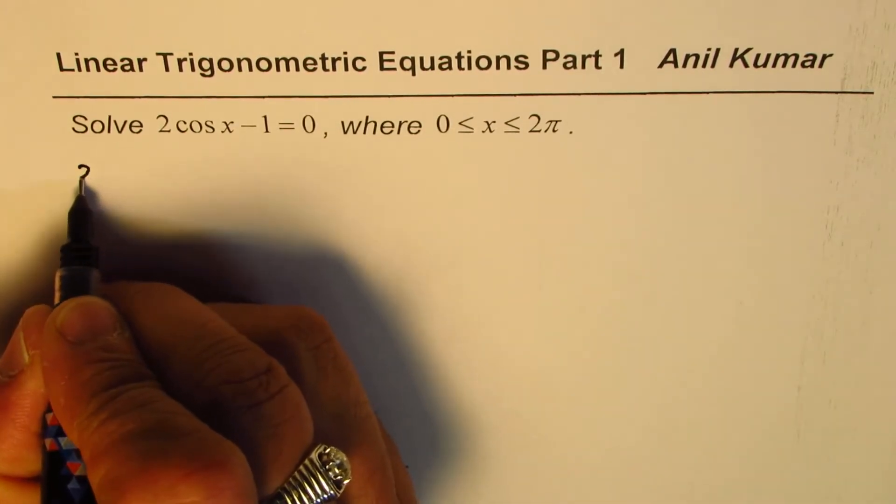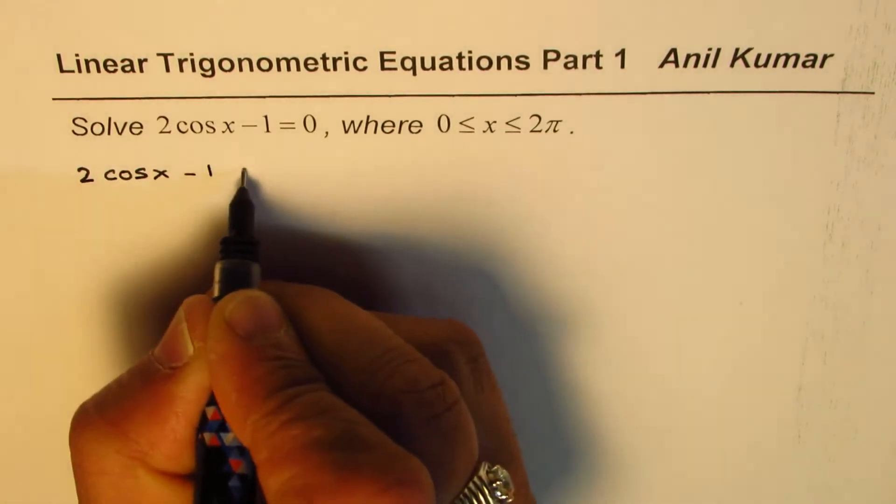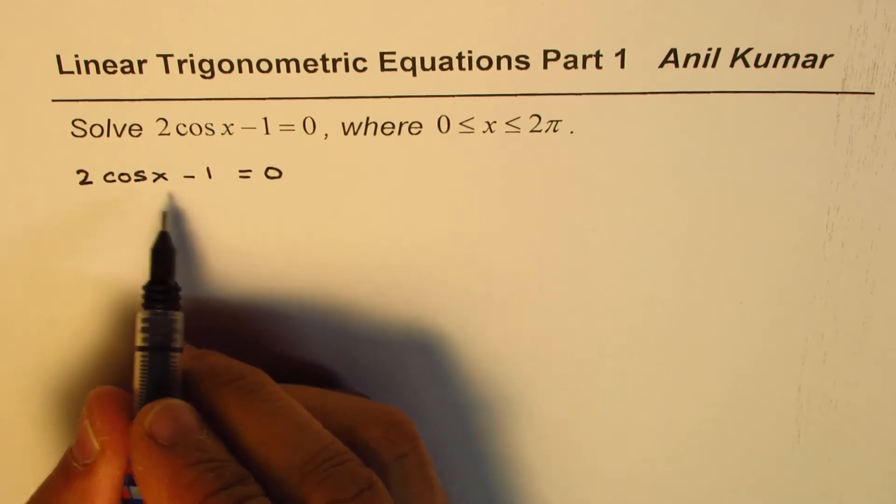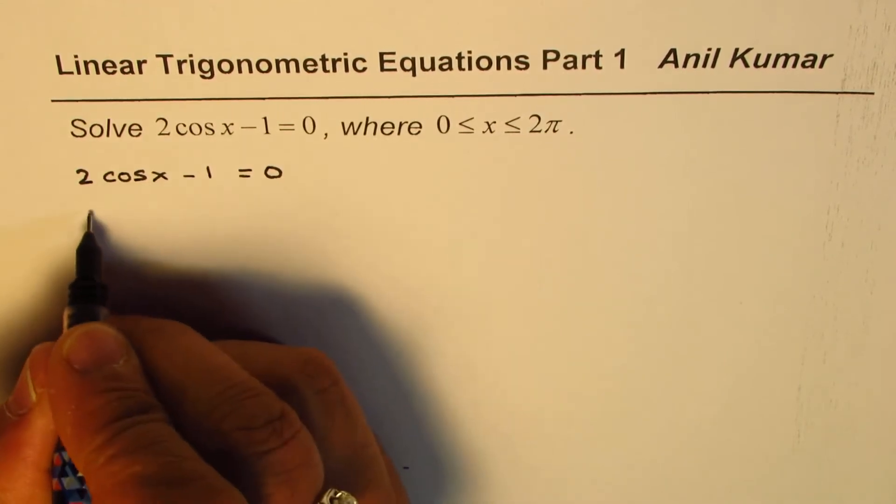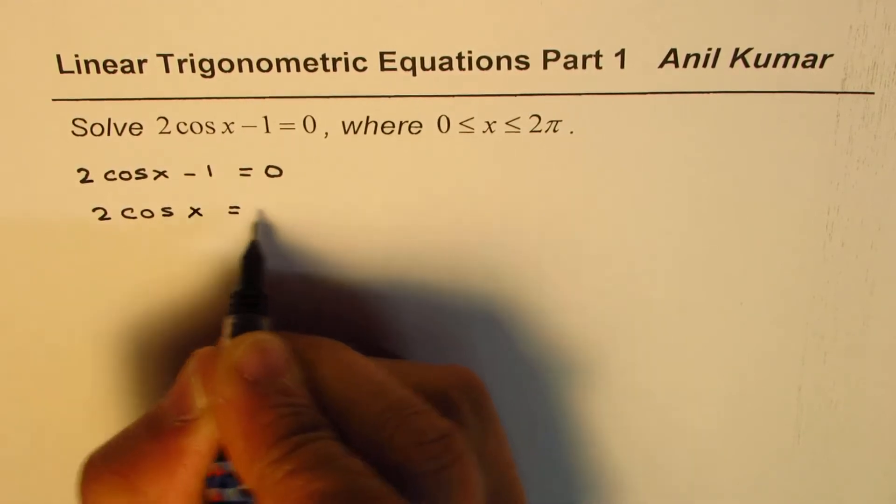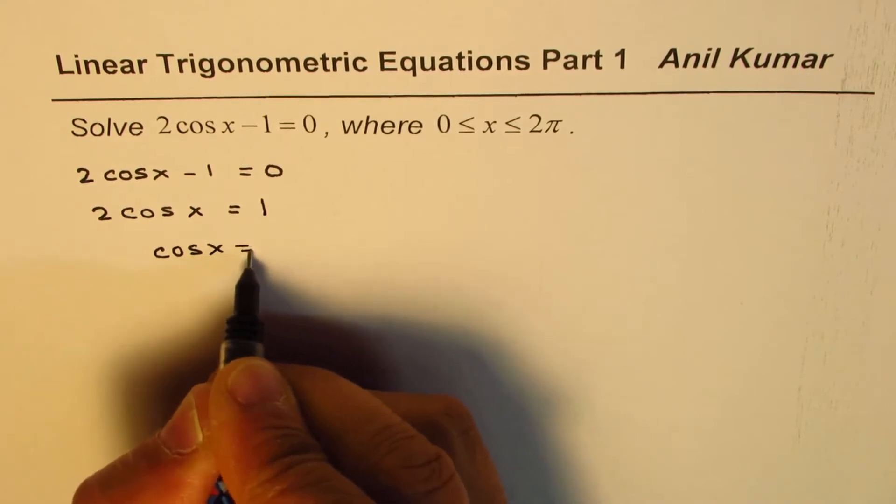Let's rewrite the equation. It is 2cos(x) - 1 = 0. We need to simplify this equation to isolate cos(x). So we get 2cos(x) = 1 or cos(x) = 1/2.